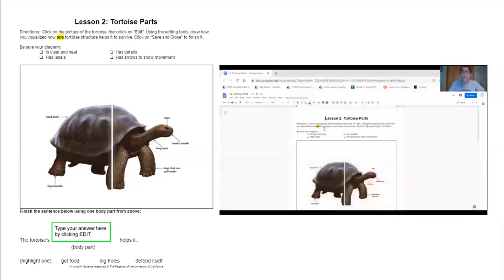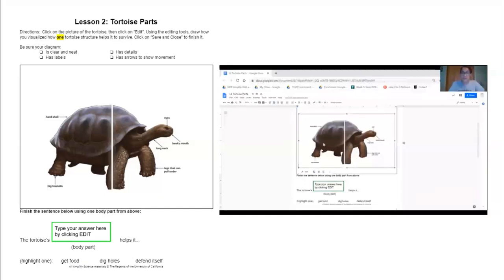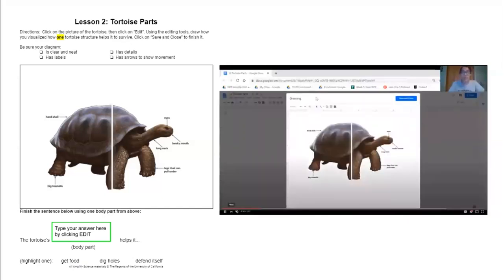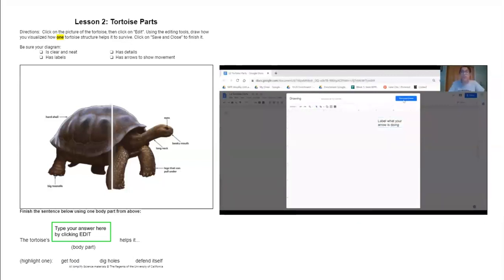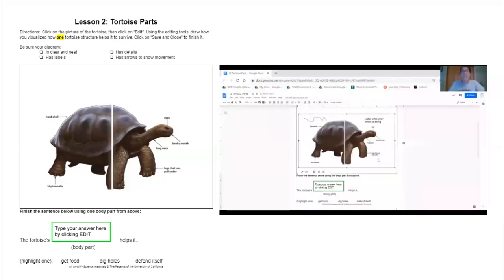Once you open up the document, you can click on the tortoise diagram. The box at the bottom will come out and you click edit. This will open up your drawing tools. Then you click on this spot right here to bring down the lines. You're going to select the scribble. And here you can draw your arrow of how you visualize the tortoise using its structure to survive. Make sure that you label what your arrow is doing. You can get a label by clicking on this T here and then pulling out the box and then you can start typing.